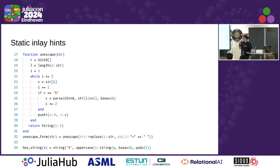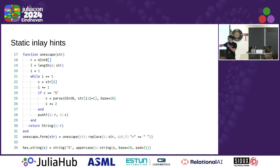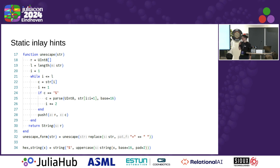There's also some very basic static inline hint support, and that's what you can see here. In this case, we're just printing the parameter names for function calls, which might be useful in some cases if they're descriptive enough. So maybe consider not naming all of your arguments x, y, and z.